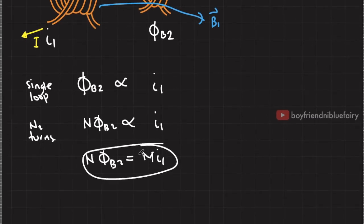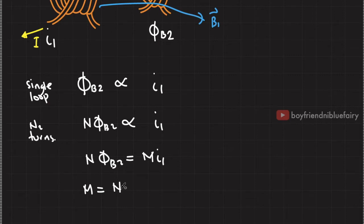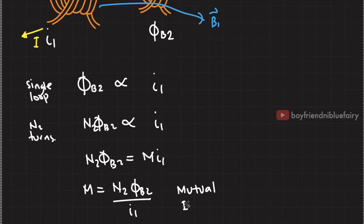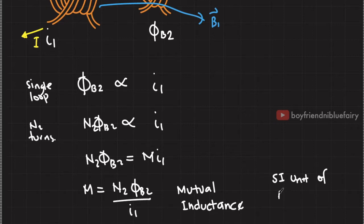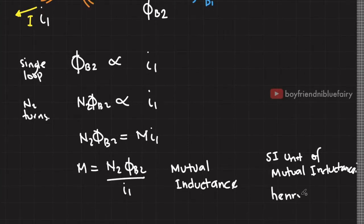We can rewrite this in terms of M: M equals N_sub_2 times phi_B2 over I_sub_1. This constant M is called mutual inductance. The SI unit of mutual inductance is the Henry, symbolized by capital H.